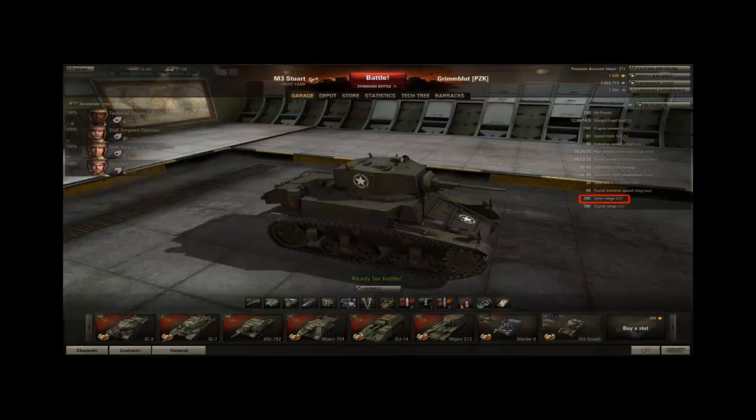This is a major source of misunderstanding. The M3 Steward doesn't have a view range of 380 meters, but this range is the maximum possible view range you can achieve with this tank. You only get this maximum view range if your commander has a crew level of 100%, and if your tank is equipped with a binocular, and if your tank doesn't move for 3 seconds so that the binocular gets actually activated.